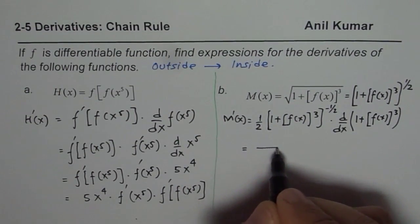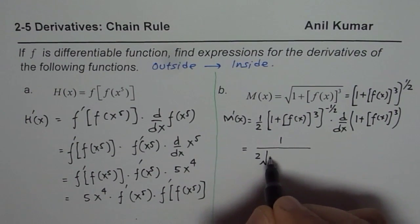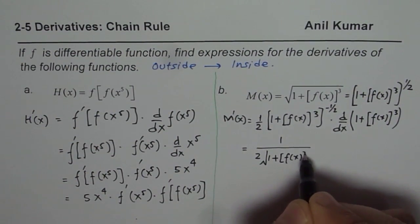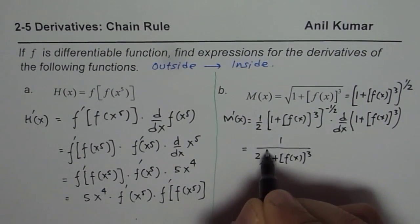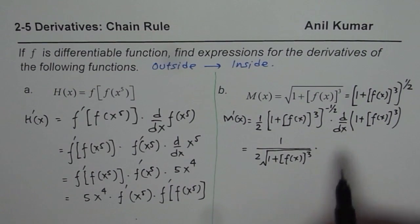This could be written as 1/(2√(1 + [f(x)]³)), times the derivative of this function. The derivative of 1 is 0, as you know.